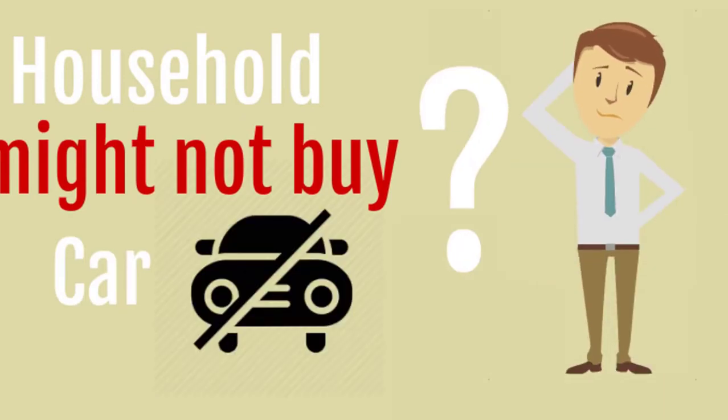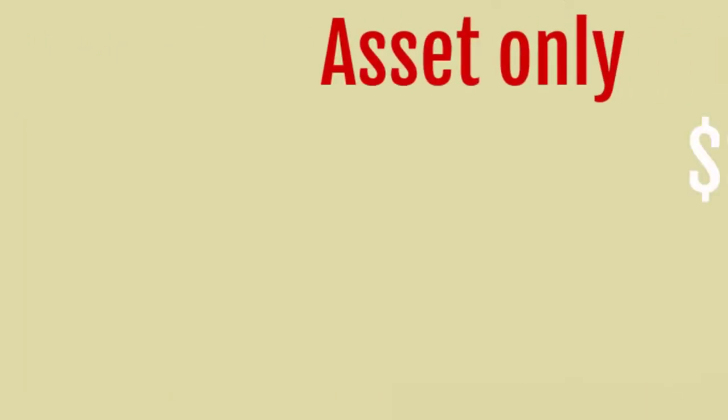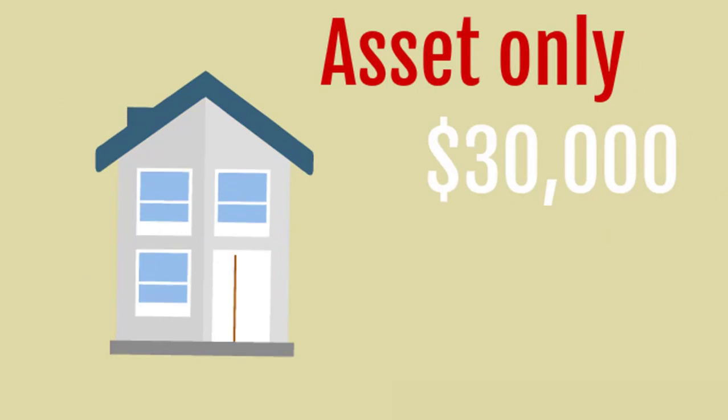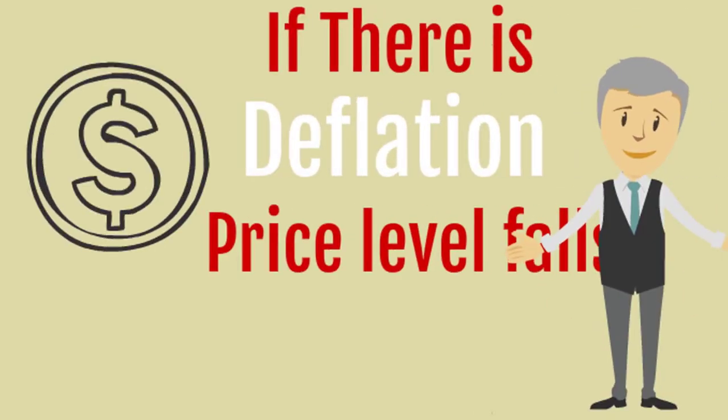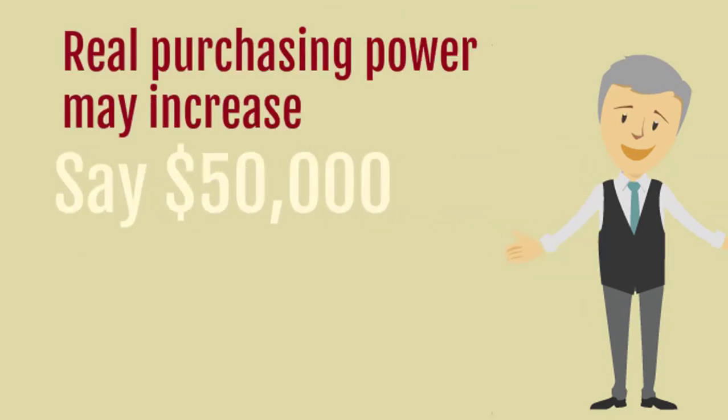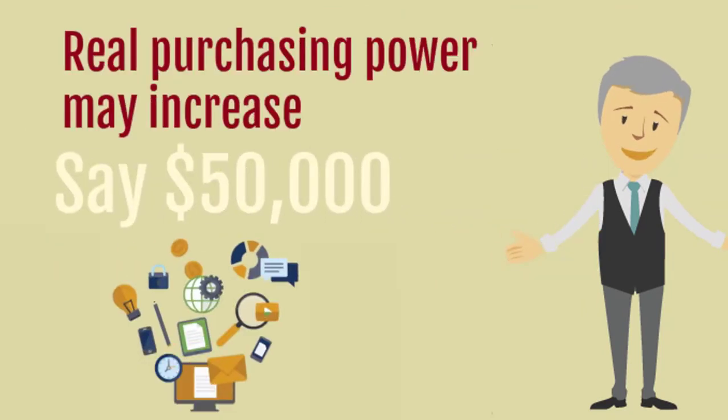For example, a household might not buy a new car if the purchasing power of its assets is only $30,000. If there is deflation and the price level falls, the household's real purchasing power may increase to, say, $50,000. So the new purchase is more likely to be made.